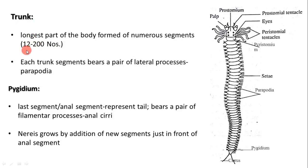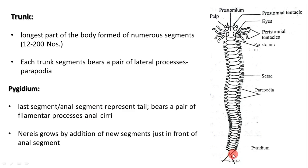The last segment, or anal segment, is called the pygidium, which represents the tail part. It bears a pair of filament-like processes called anal cirri. At the pygidium you can see a pair of filament-like structures directing backward — these are called cirri (singular: cirrus), specifically anal cirri, because the anus opens out of the pygidium.